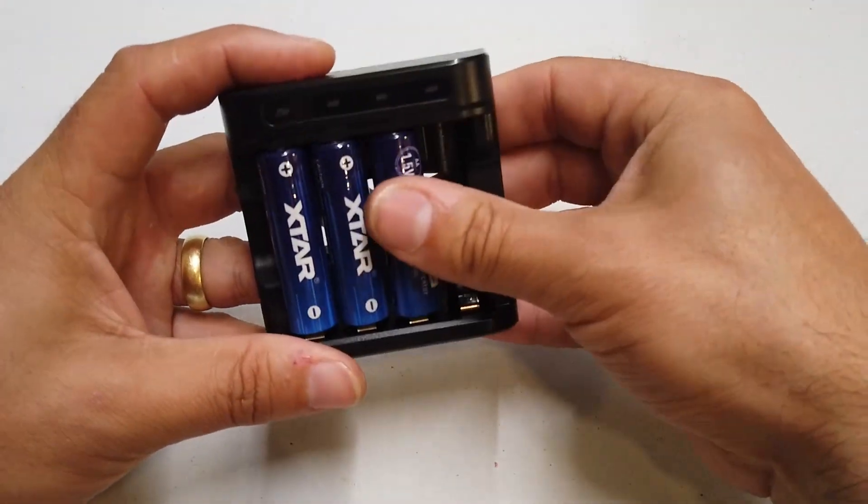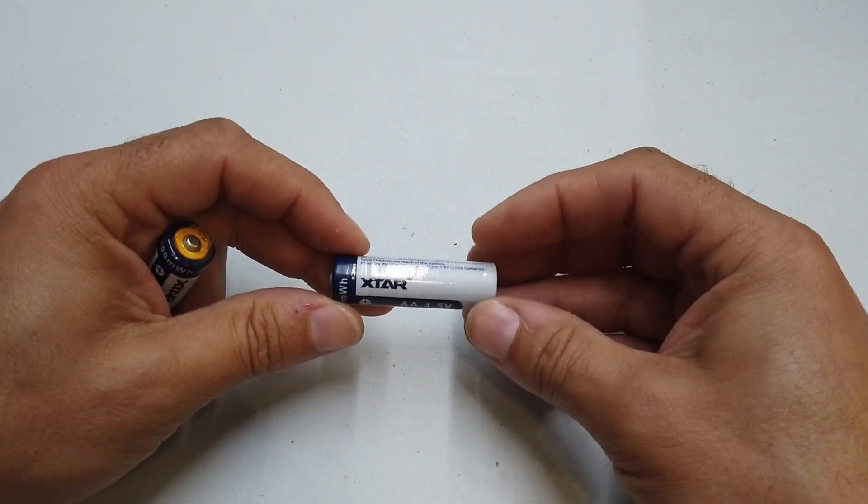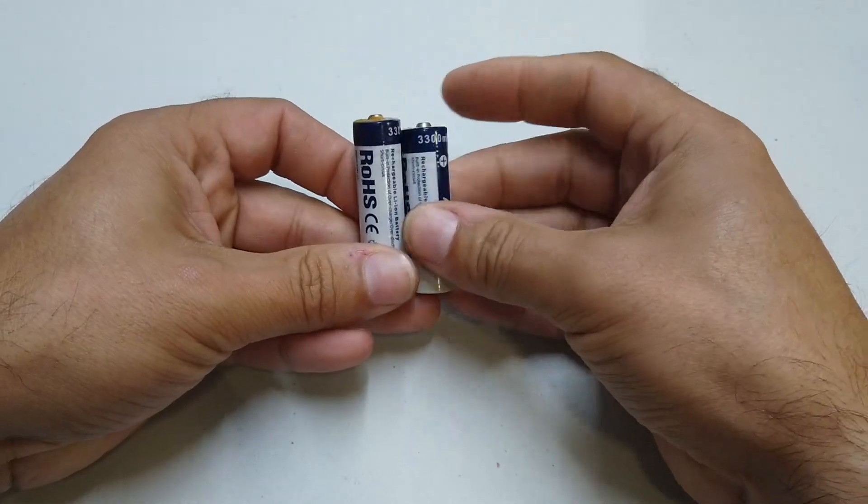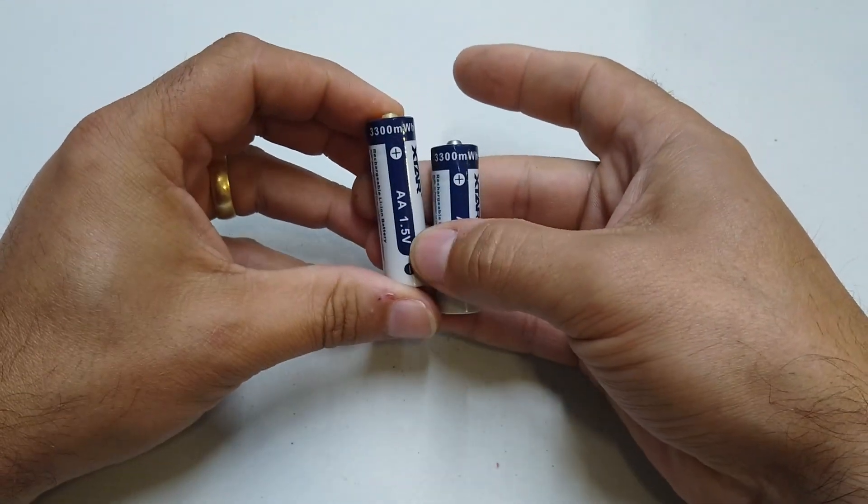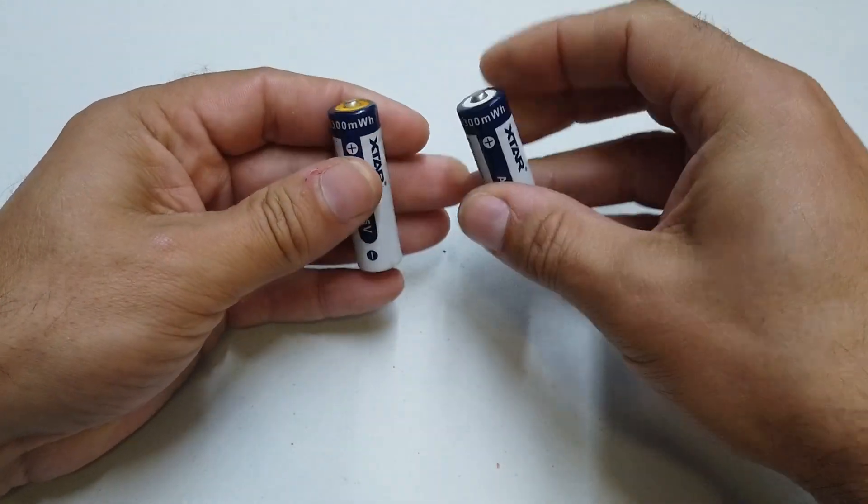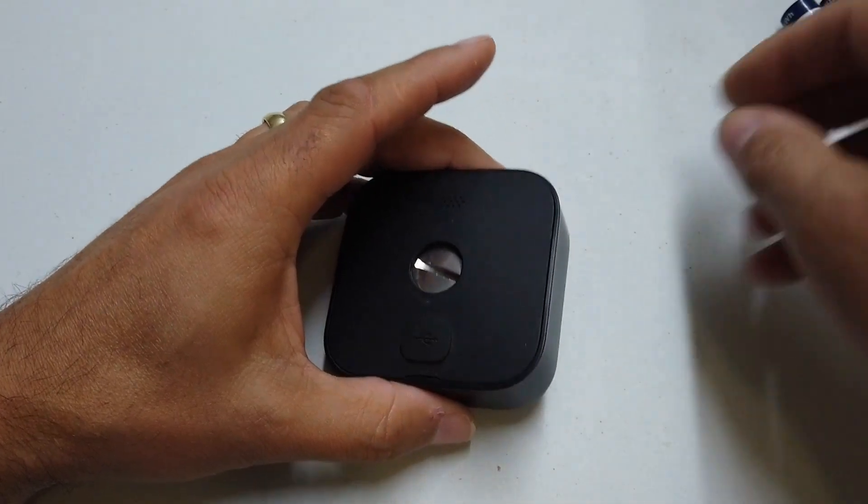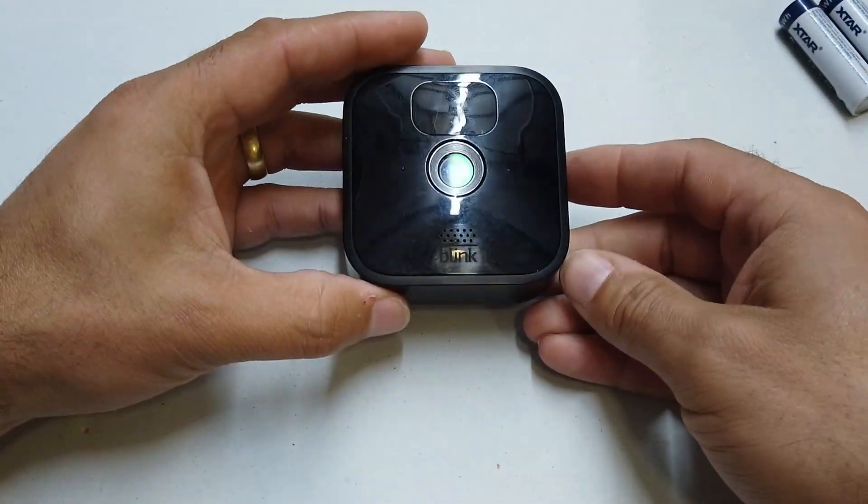The other thing I wanted to show you, these are the early X-Star batteries. Here's the interesting thing about these early X-Star batteries. Again, 1.5 volt lithium ion, 3,300 milliwatt hour. They were driving a Blink camera, this is the Amazon Blink camera, and they were driving my Blink camera outside for a period of time and it was all working okay.